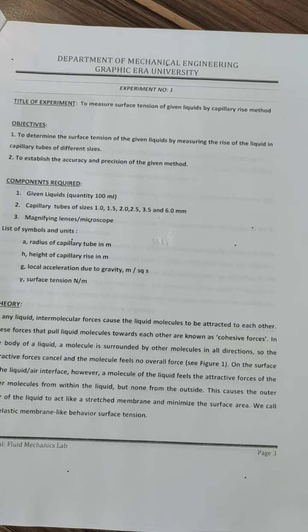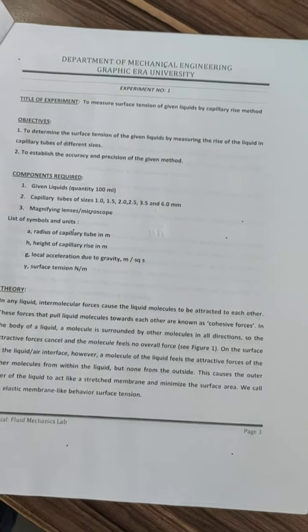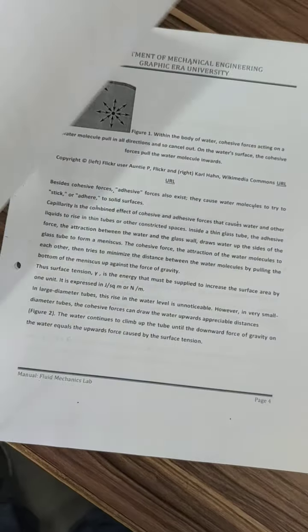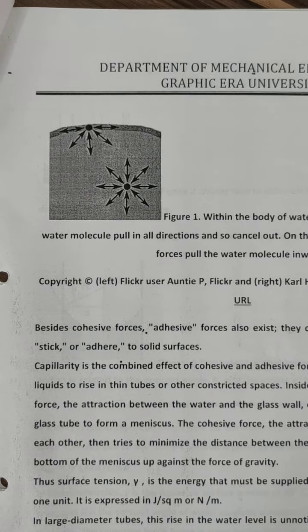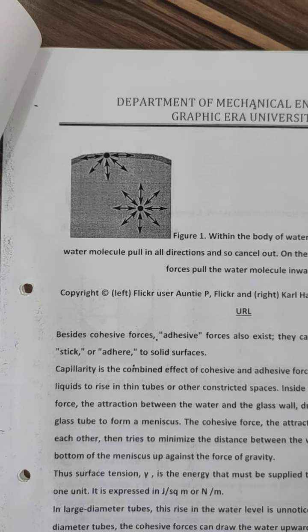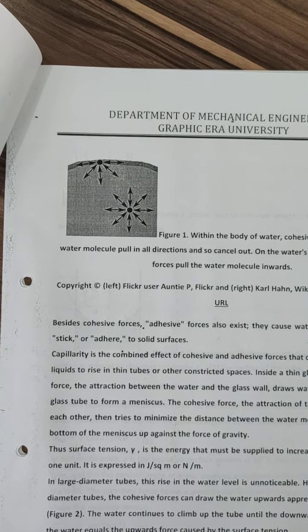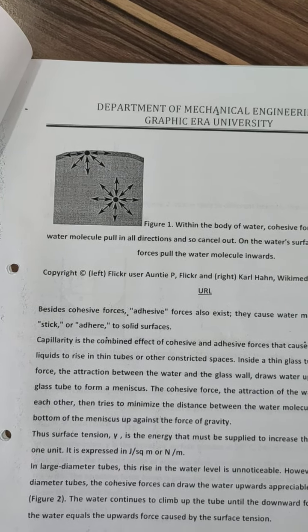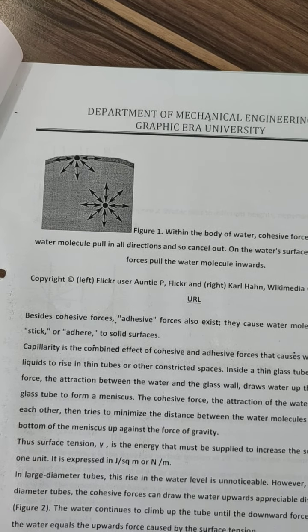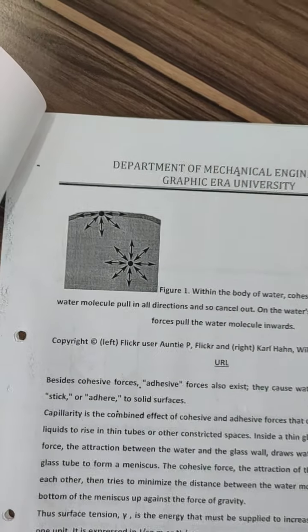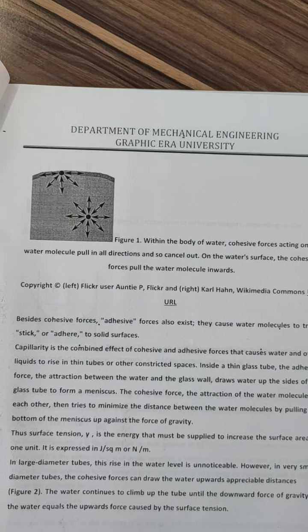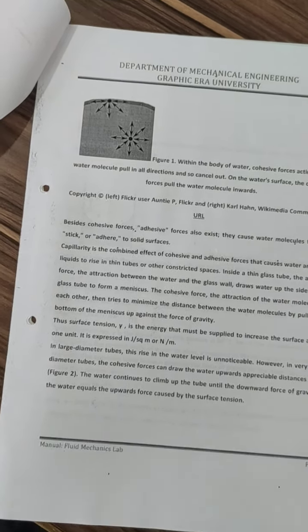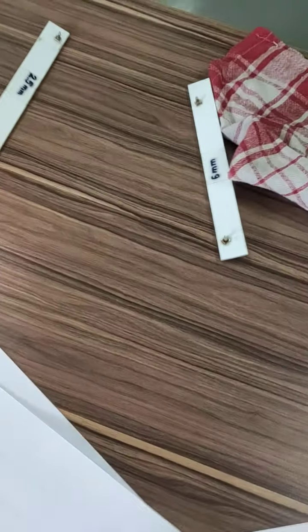So first of all, what is surface tension? Surface tension is a surface phenomenon which occurs due to the cohesion force between the molecules. Cohesive forces occur between the same-natured molecules, while adhesive forces occur between different molecules. The basic reason for surface tension is the cohesion and adhesion force acting between the molecules.